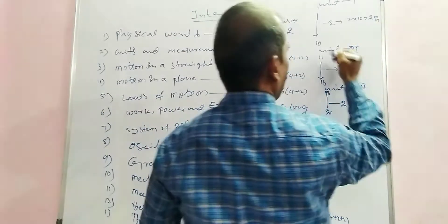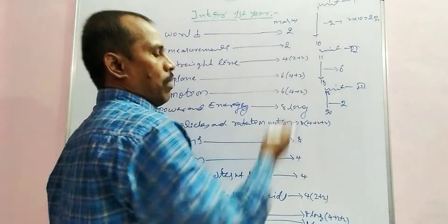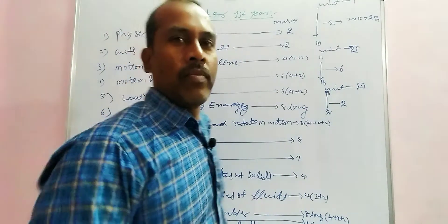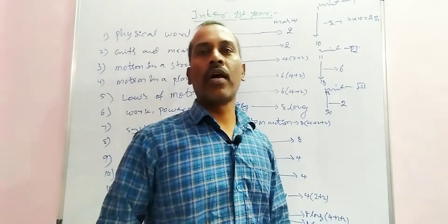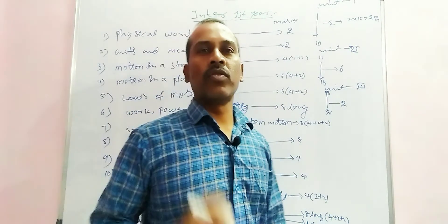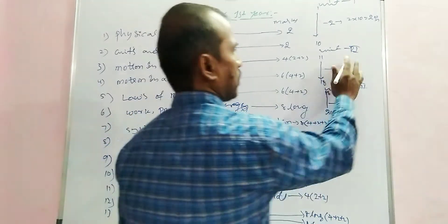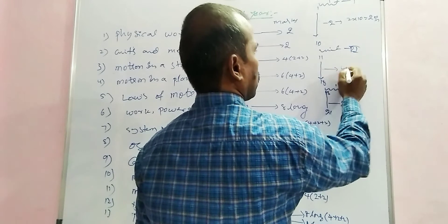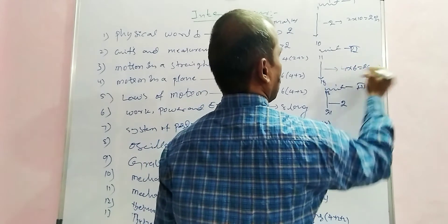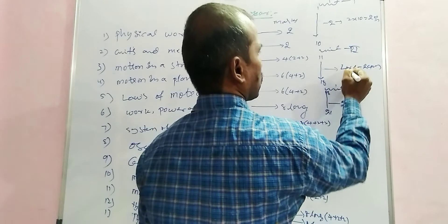For the second unit, there are questions carrying 4 marks each. Six questions multiplied by 4 marks each gives 24 marks for the second unit.